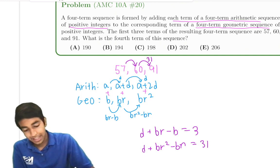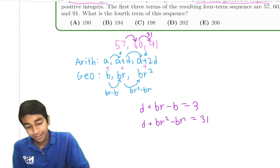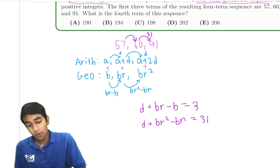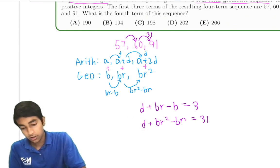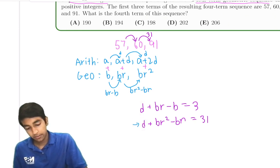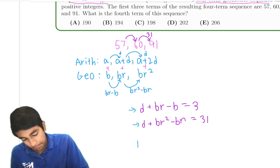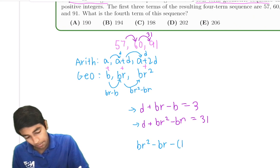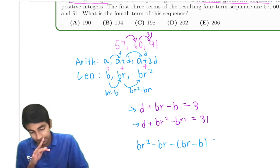So then what we're going to do is subtract the first equation from the second equation, because that way we're canceling out the d's.